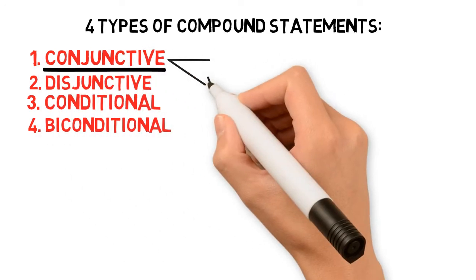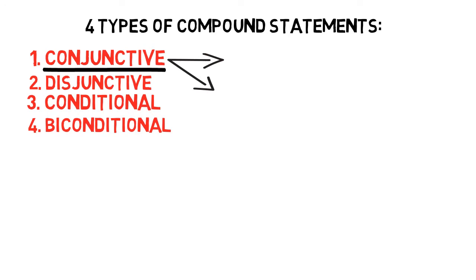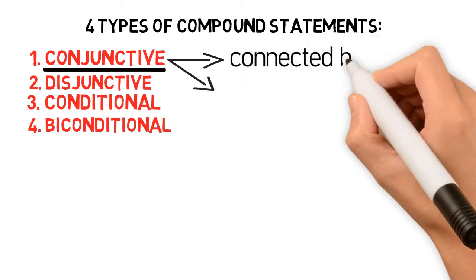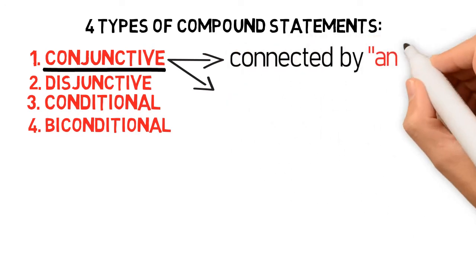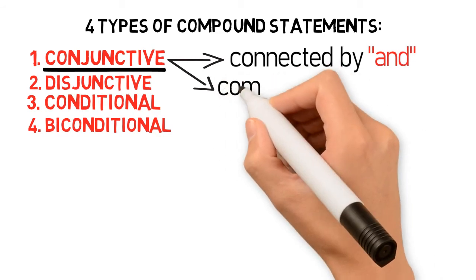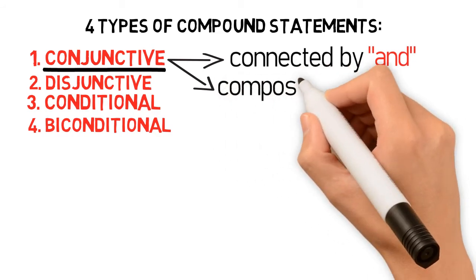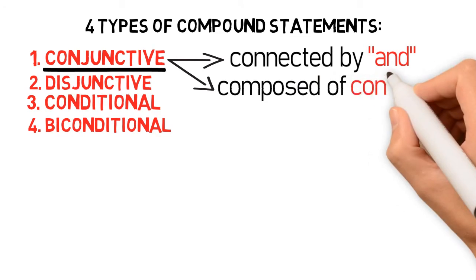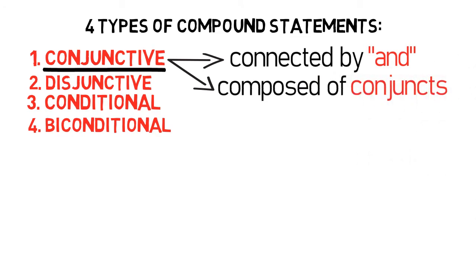A conjunctive statement or conjunction is a compound statement connected by the word 'and'. The component statements in a conjunction are called conjuncts. Let's consider this example.